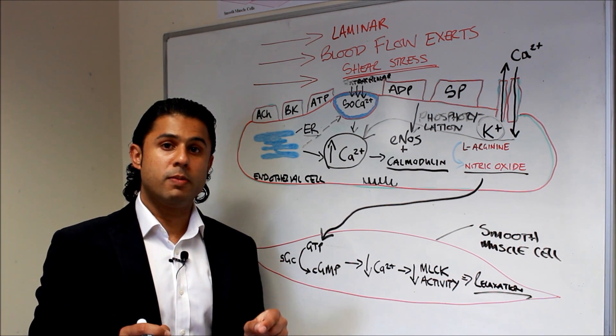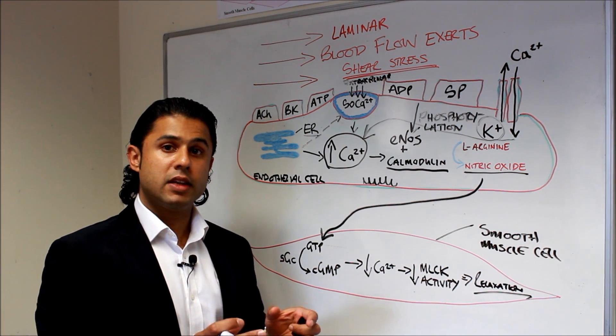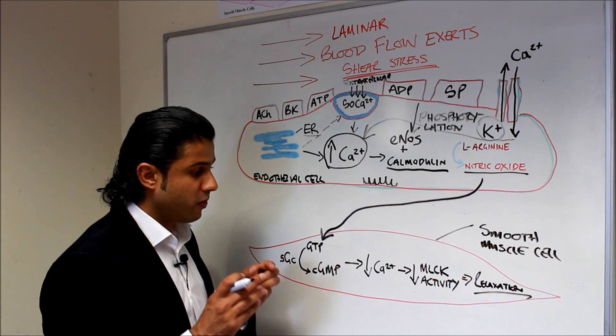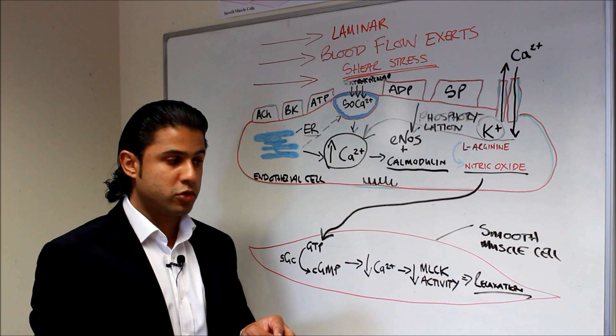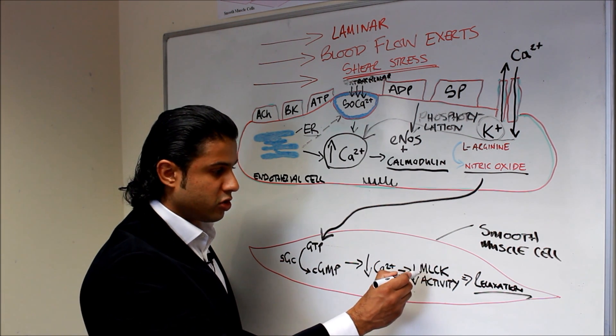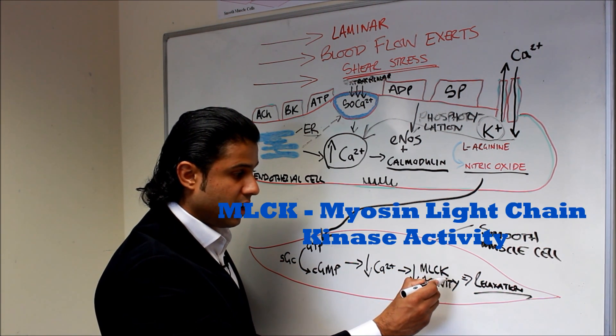Now we know that calcium is extremely important for actin and myosin cross-bridge formation, so if you get rid of calcium you're not going to get muscle contraction. You also get a reduction in myosin light chain kinase activity.